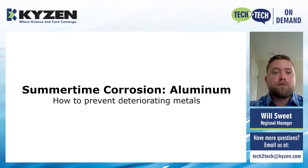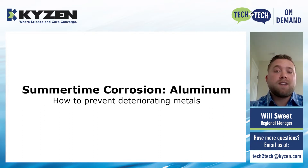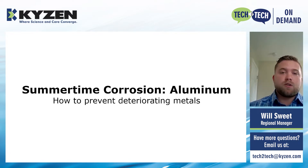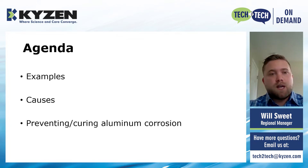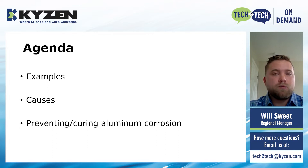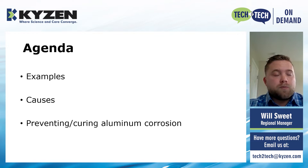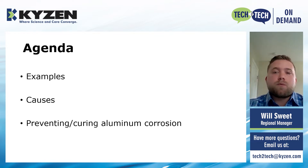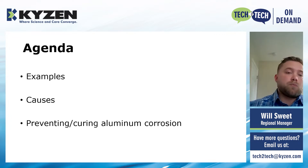Summertime corrosion and how to prevent the deteriorating of metals — in this case, aluminum. Corrosion is essentially the deteriorating of the aluminum itself. The agenda for today: we're going to start off with some examples of what corrosion is and what it looks like when it comes to aluminum parts. We'll move on to the causes, and finally we'll finish with preventing and curing aluminum corrosion in your process.